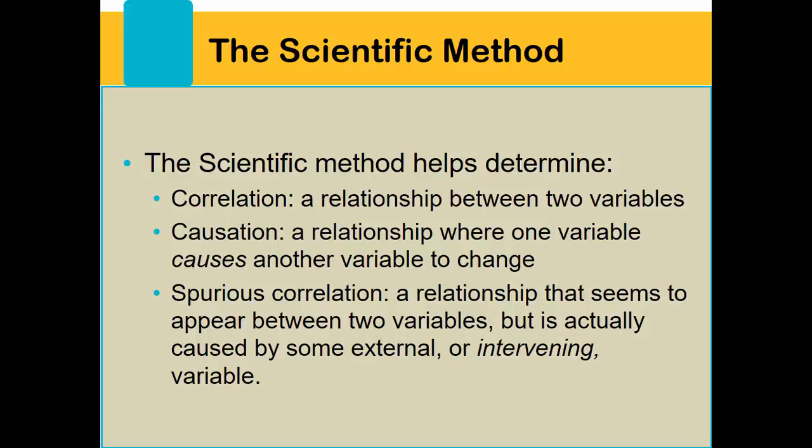Another example of a spurious correlation, if the African-American male police example doesn't make sense to you, is the ice cream murder hypothesis that's laid out pretty well in your book. The hypothesis that states, and it's obviously ridiculous, that if you consume ice cream, you're more likely to kill somebody. The reality of that matter is that both of those things happen more often in the summertime. If you need greater clarification, by all means, seek your book for that.